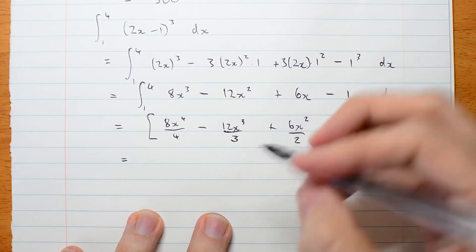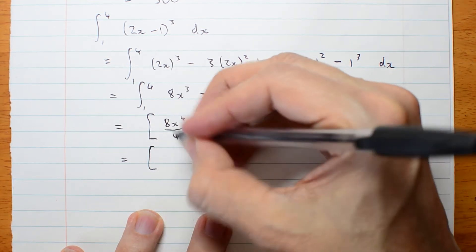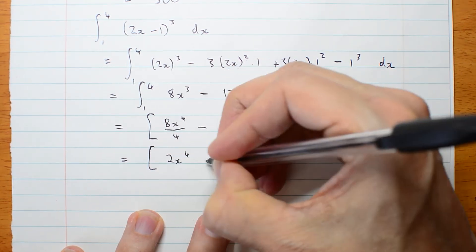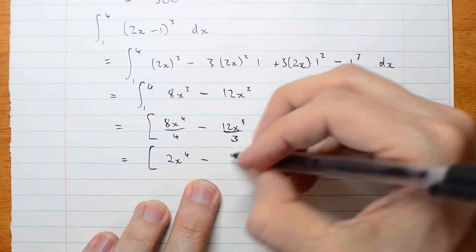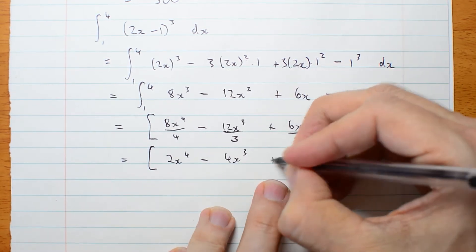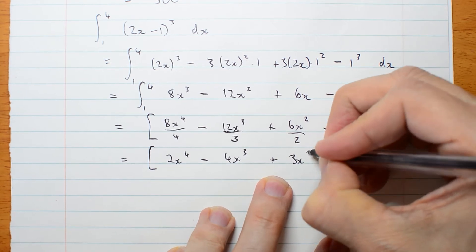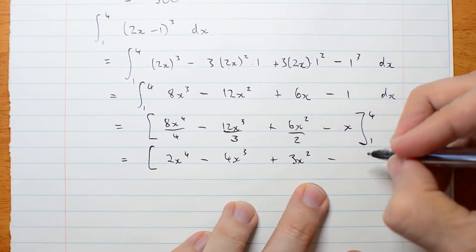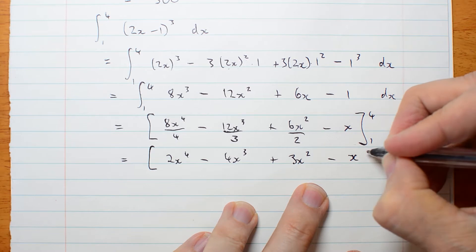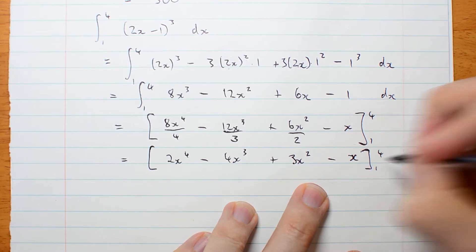All right, it's going to be a mess. First, I might simplify some of that. 8 on 4 is 2x to the 4th. 12 on 3 is 4x cubed. 6 on 2 is 3x squared minus x from 1 to 4.